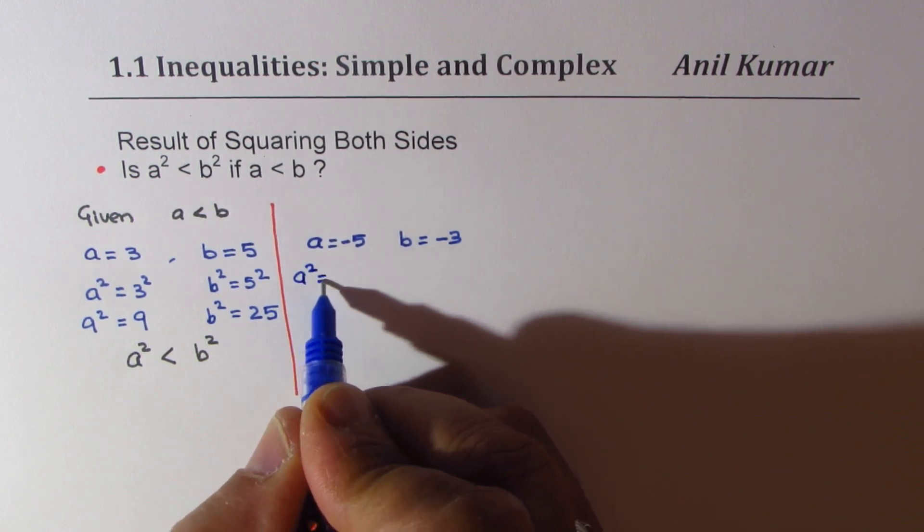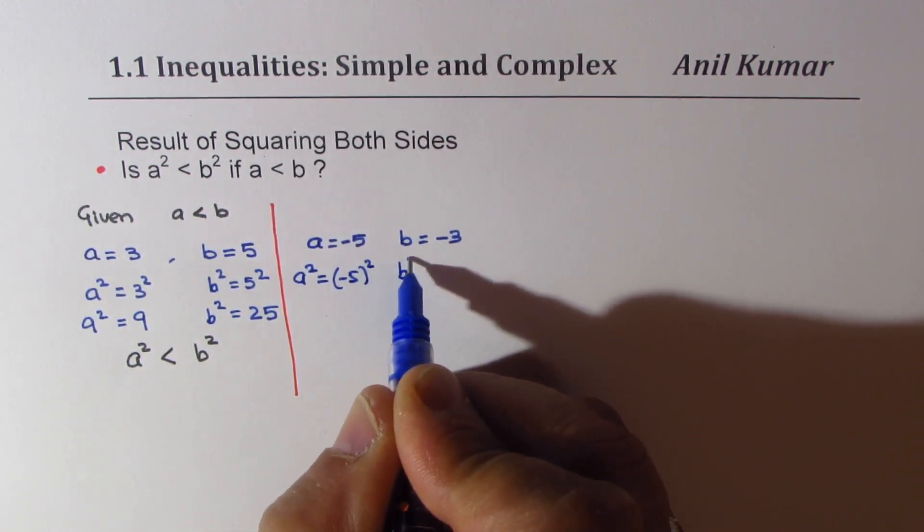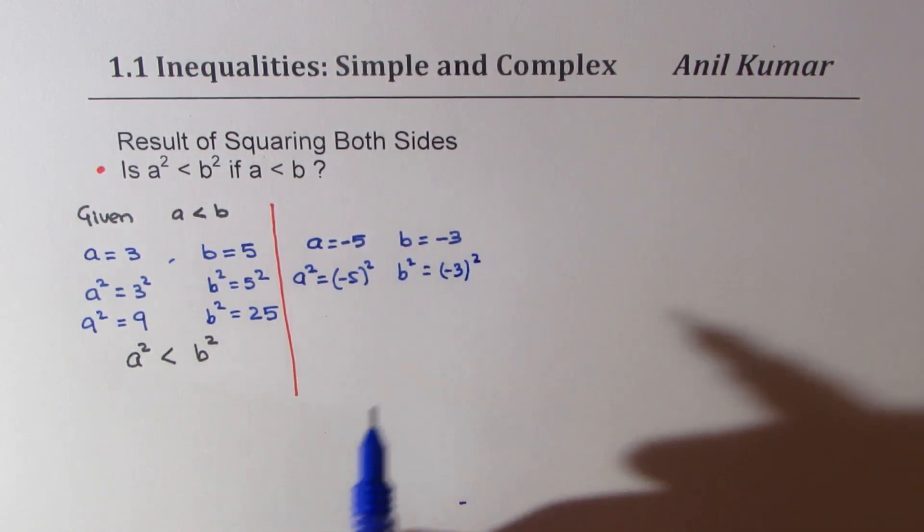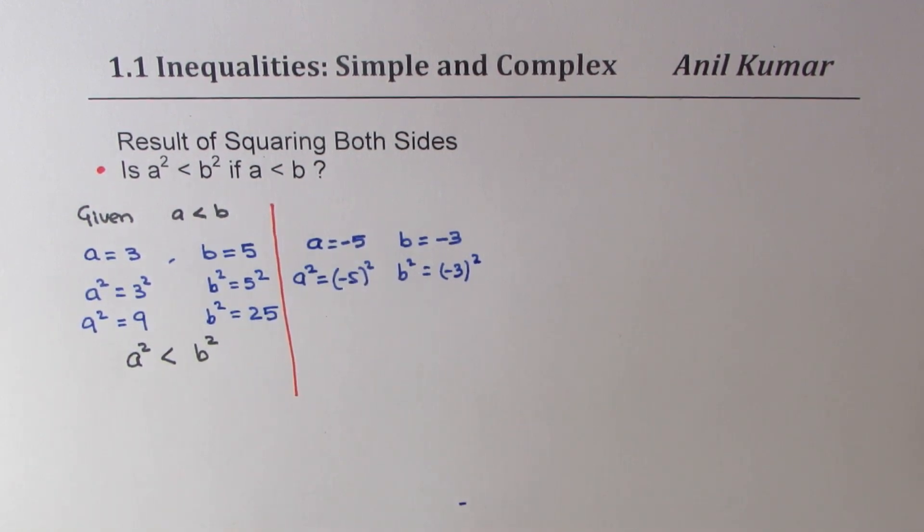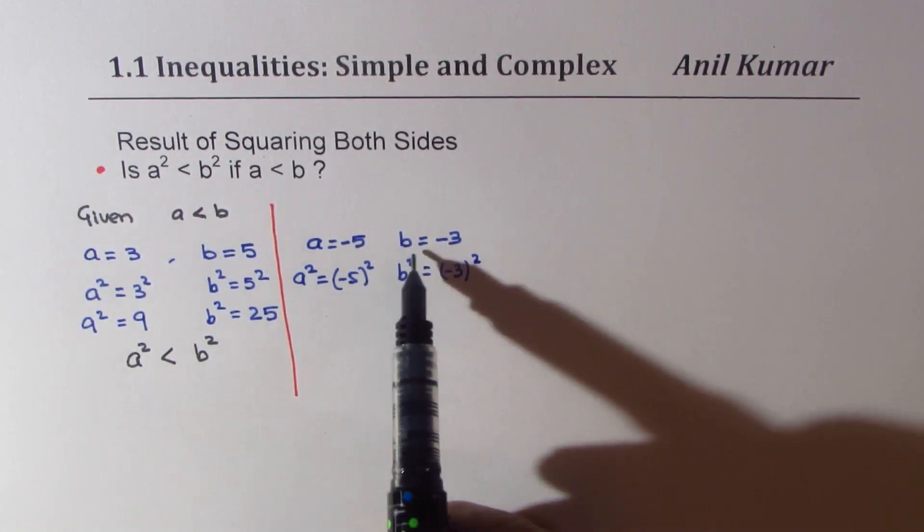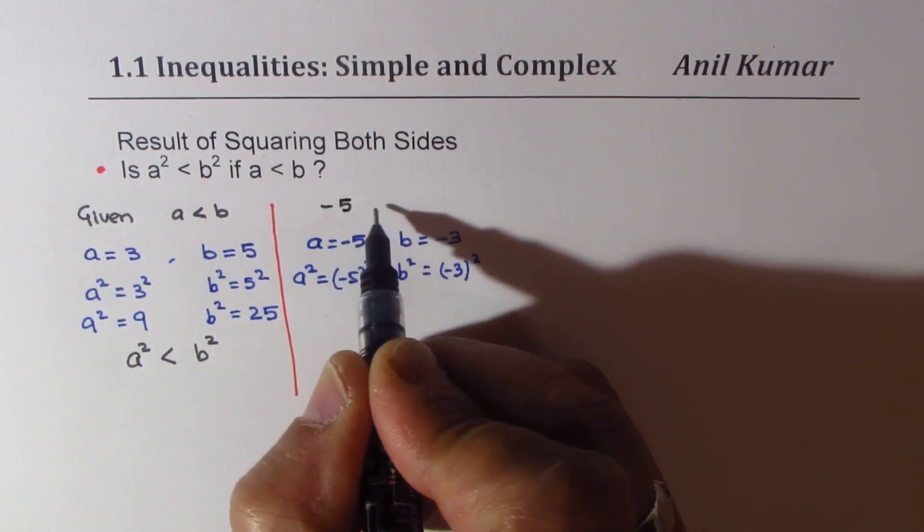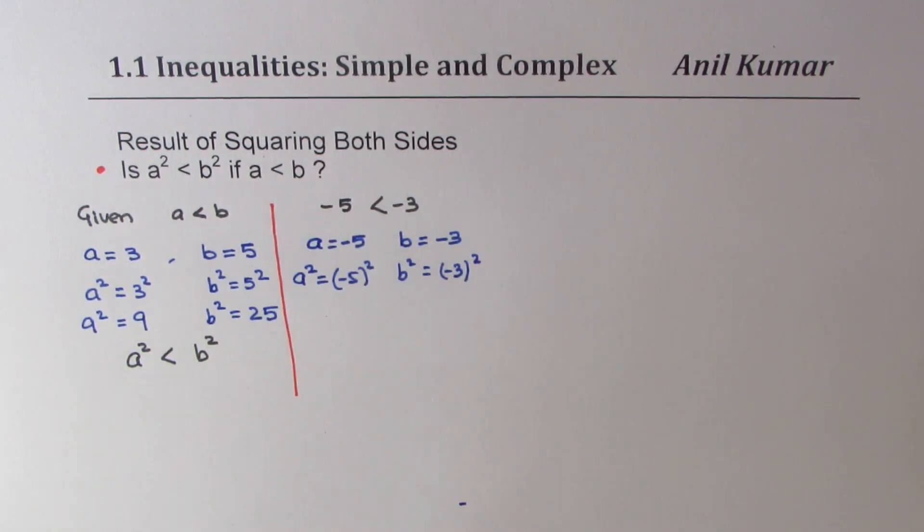then a² will be (-5)², and b² will be (-3)². Now, see, when I write a = -5, and b = -3, we know that -5 < -3, right? It is on the left side of our number line. Perfect.